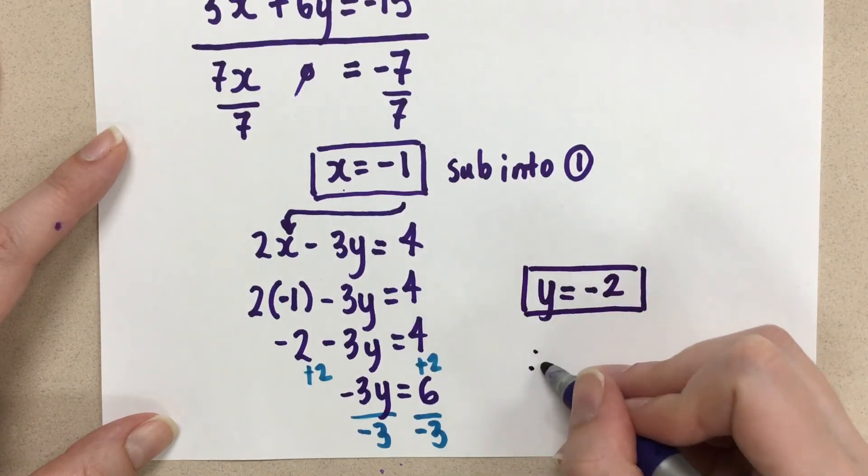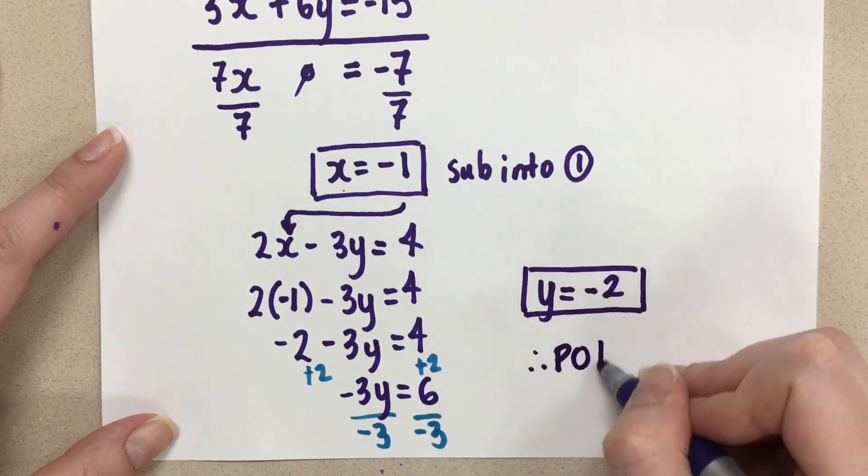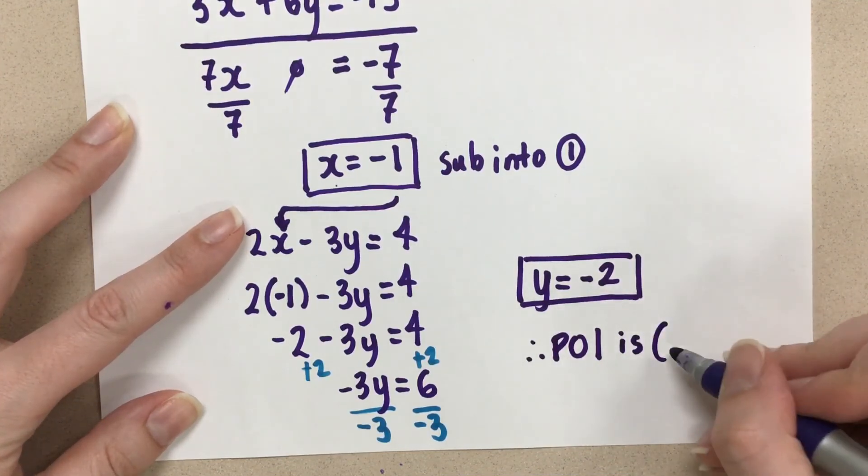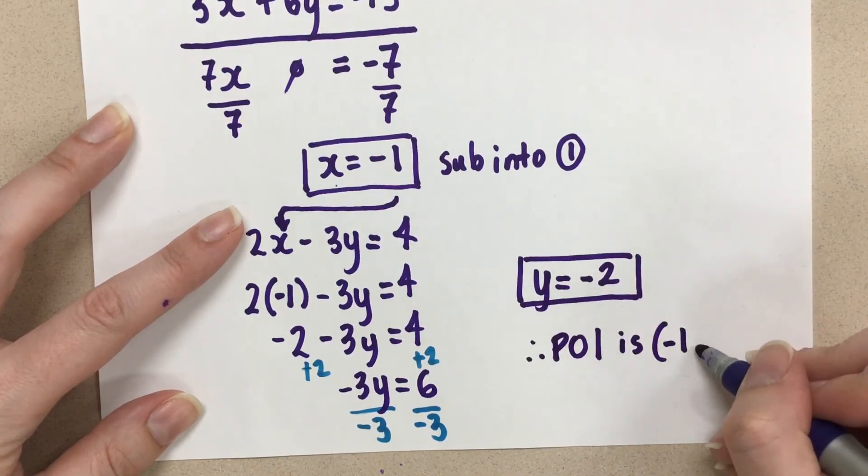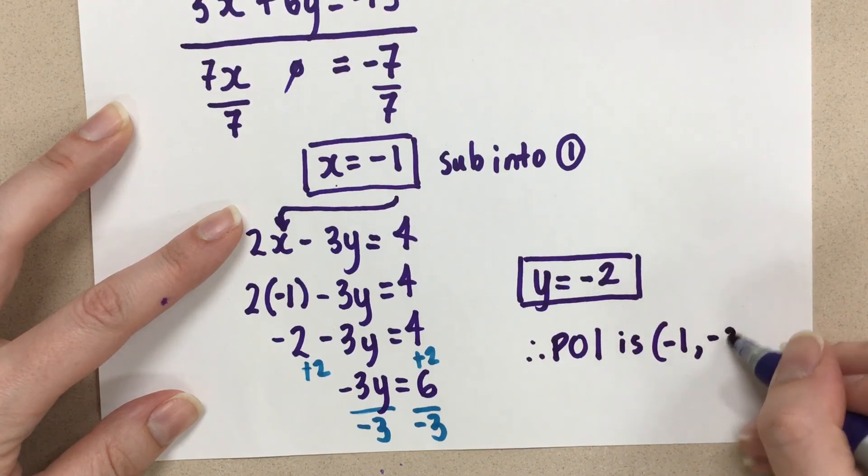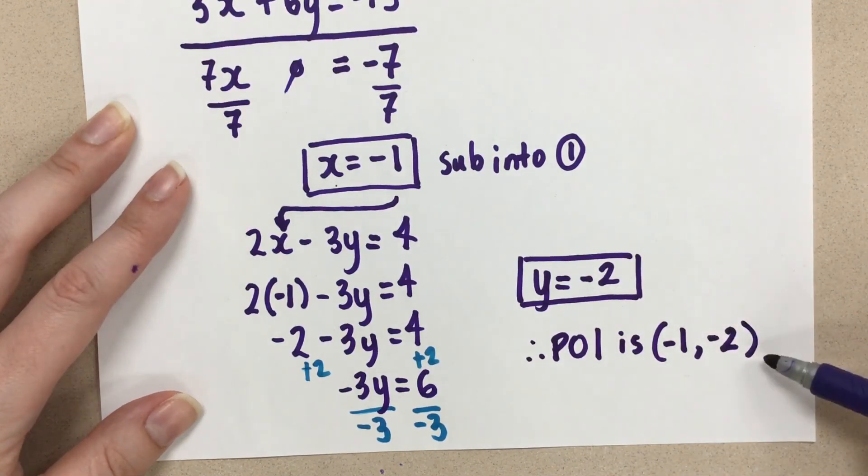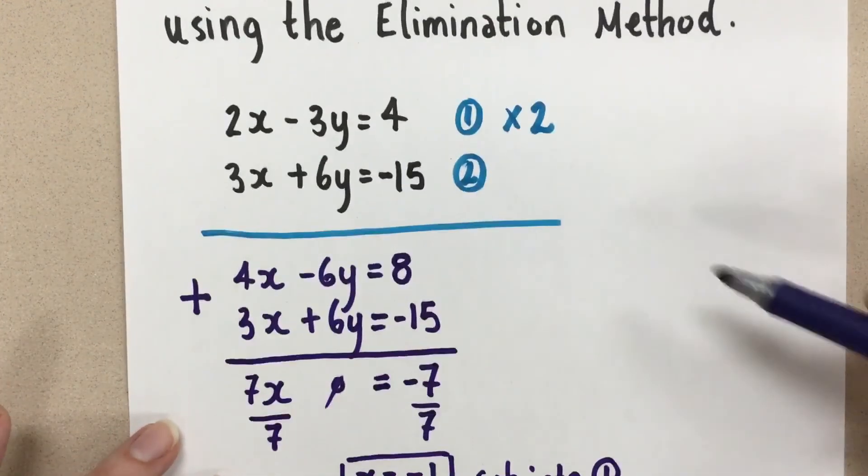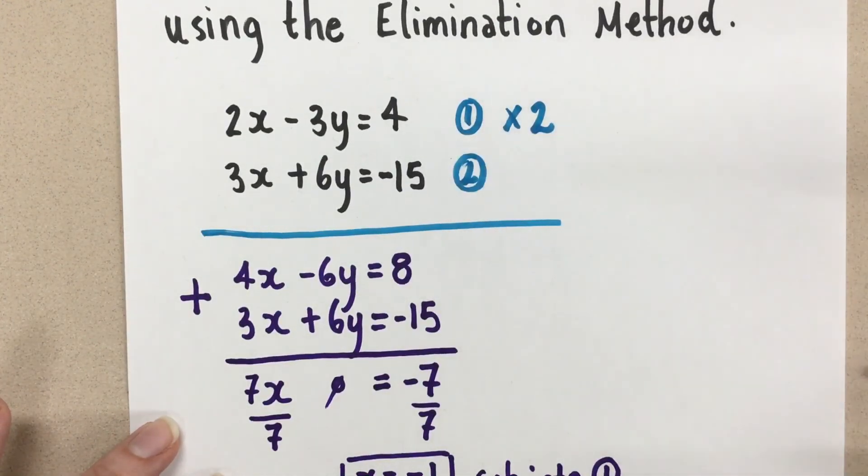So our point of intersection for the two lines that we had in the original question is x, which was negative 1, comma y, which is negative 2. So that is the solution to our system, which is the point of intersection for the two lines that we were given.